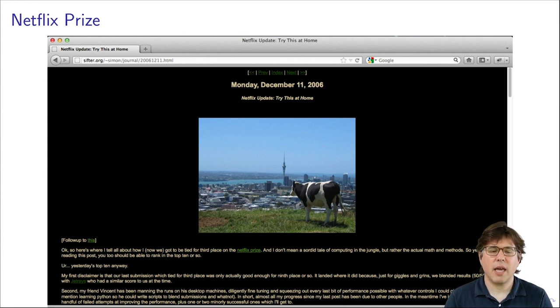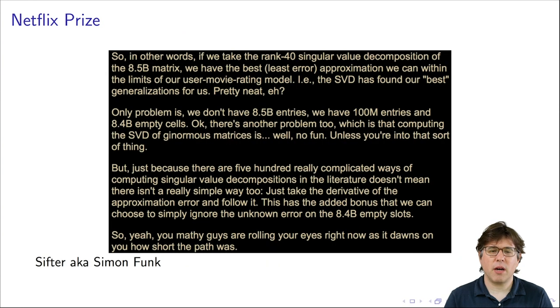So let me give you an example of what something like this can enable. So this is a blog post that came out during the Netflix prize. And let me zoom in on part of it. This is a key part right here. So in other words, if we take the rank 40 singular value decomposition of the 8.5 billion matrix, we have the best (least error) approximation we can within the limits of our user-movie-rating model, i.e., the SVD, which found the best generalization for us. Pretty neat. So just the context here is this blog is describing what the author thinks is a very important idea in the Netflix prize. And the blog post goes on. Only problem is we don't have 8.5 billion entries. We have 100 million entries and 8.4 billion empty cells. There's another problem too, which is that computing the SVD of ginormous matrices is, well, no fun unless you're into that sort of thing.